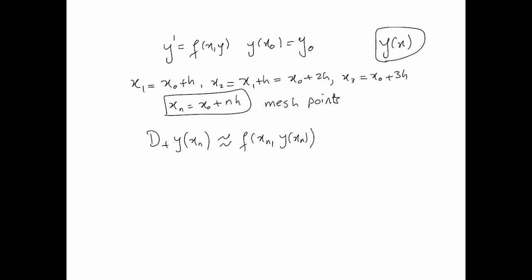What that means is that we replace the forward difference operator: [y(xₙ₊₁) - y(xₙ)]/h ≈ f(xₙ, y(xₙ)). At this stage, I'm going to introduce a notation: y(xₙ) is equivalent to yₙ for notational convenience.